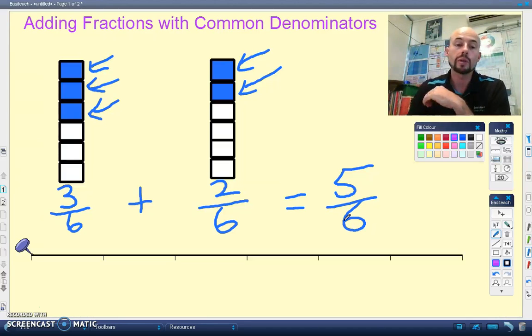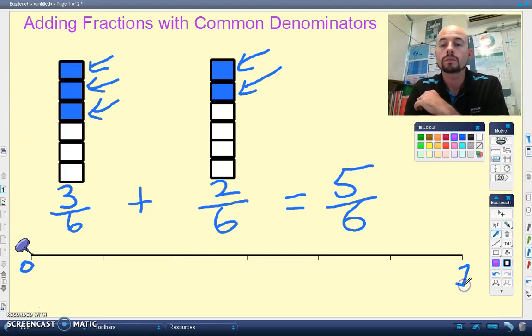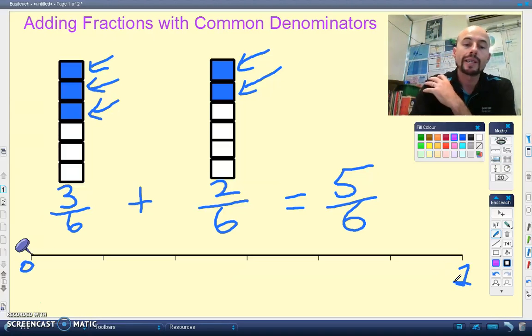We can also look at it on a number line. So we've got a number line below. At this end we've got a zero. At this end we've got one whole. Each of these is a sixth.